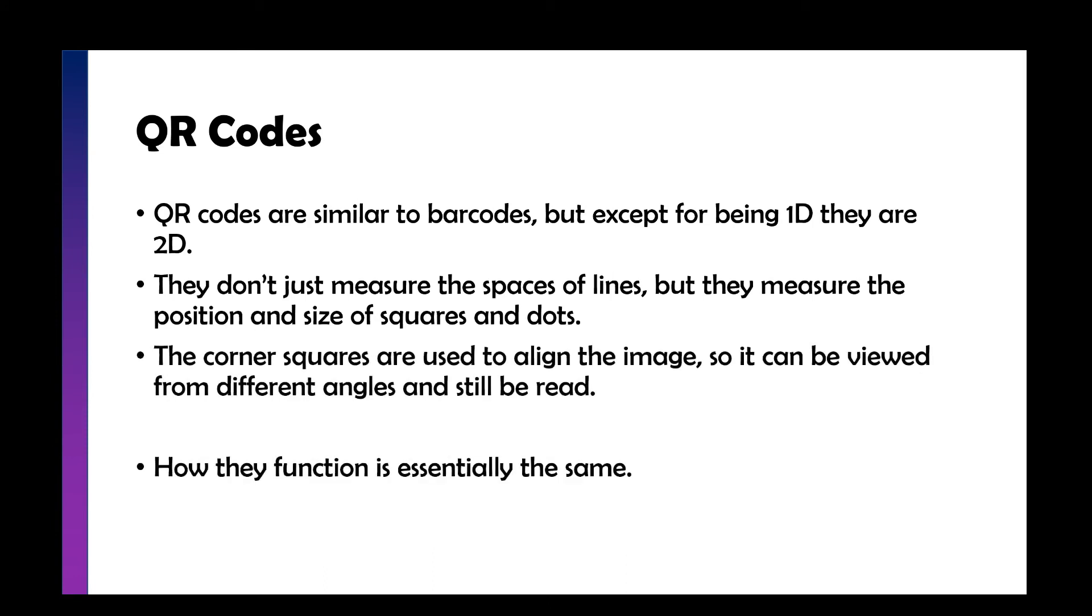Now a QR code is very similar to a barcode, except instead of being one dimensional, they are two dimensional. So instead of measuring the width of lines, they also measure the position and the alignment of squares and dots on the screen. Now there's a corner square, which we'll see on the next slide, which is used to align the image. And then there are smaller squares that are used to look at the position.